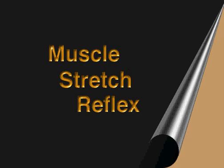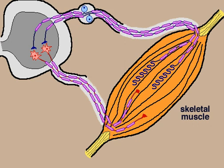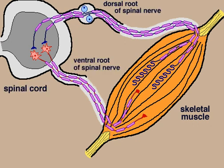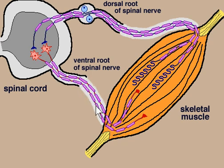We're going to have a quick look at the stretch reflex. You can see here we've got the muscle with the tendon at either end, and this is one of the nerve roots that go back into the spine. This is the spinal cord, and this is another nerve root — they call this the dorsal and this the ventral. Basically, they're just the channels that go back into the spine.